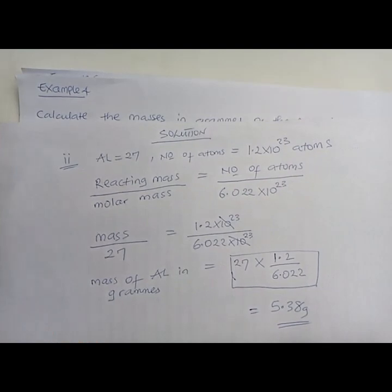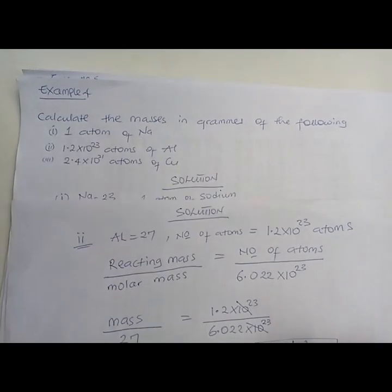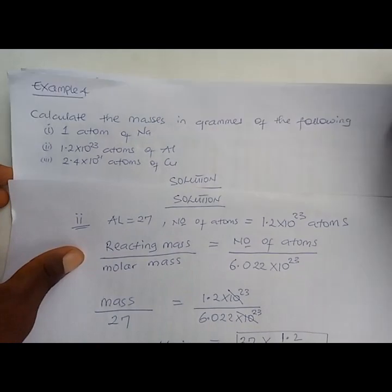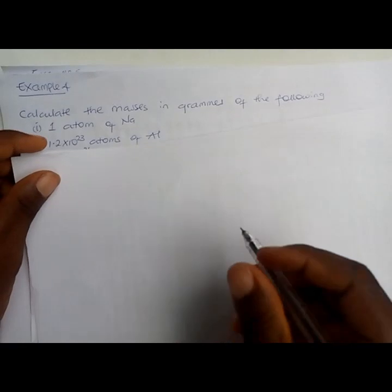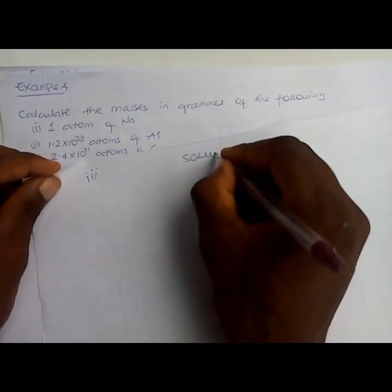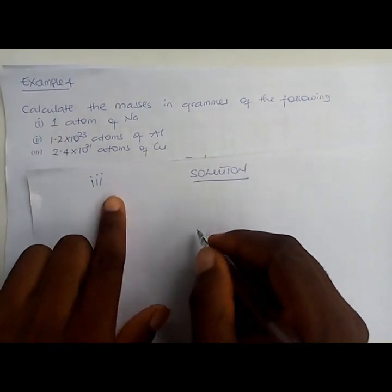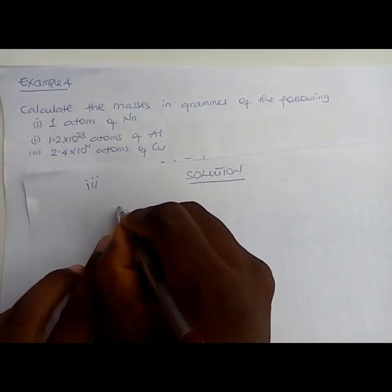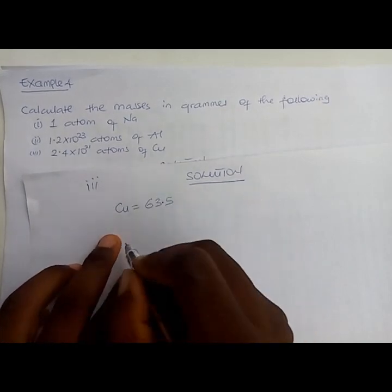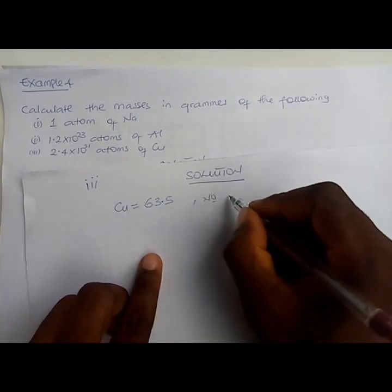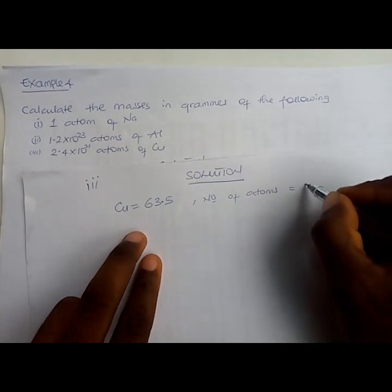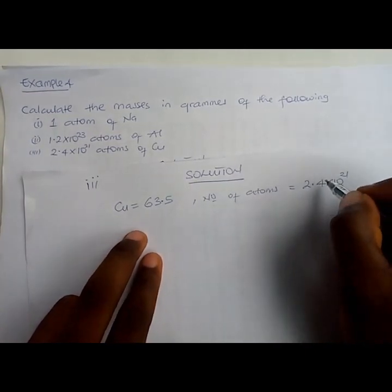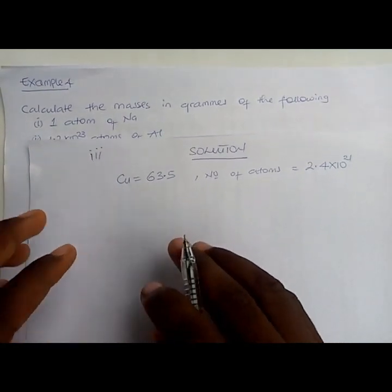Now for part iii: 2.4×10²¹ atoms of copper. The relative atomic mass of copper is 63.5. The number of atoms involved is 2.4×10²¹. We bring down the same formula: mass over molar mass equals number of atoms over 6.022×10²³.